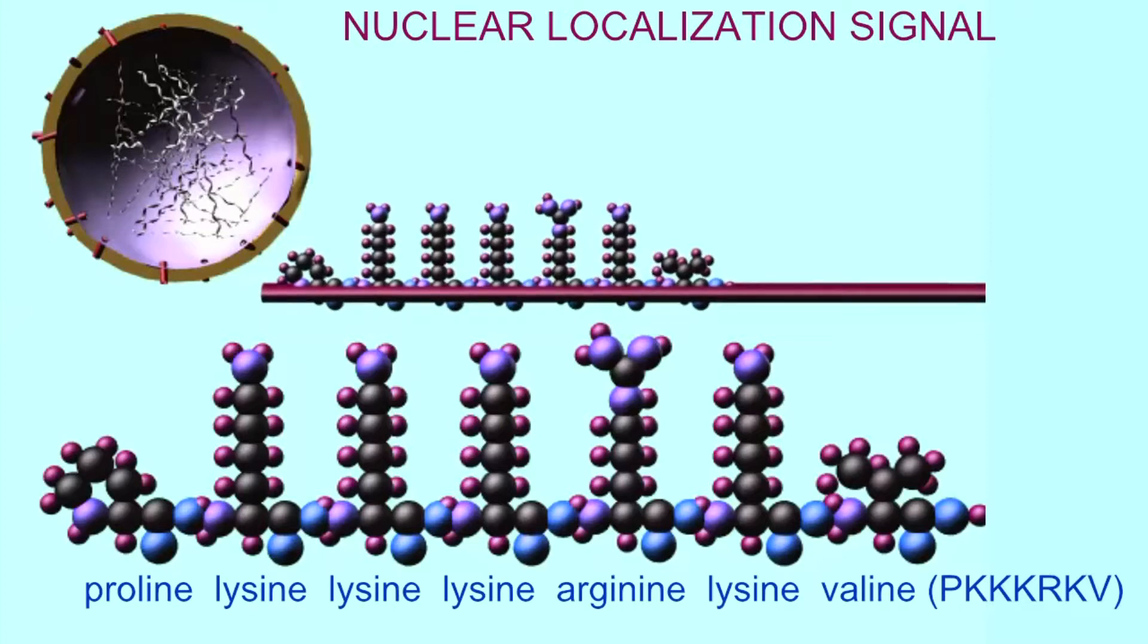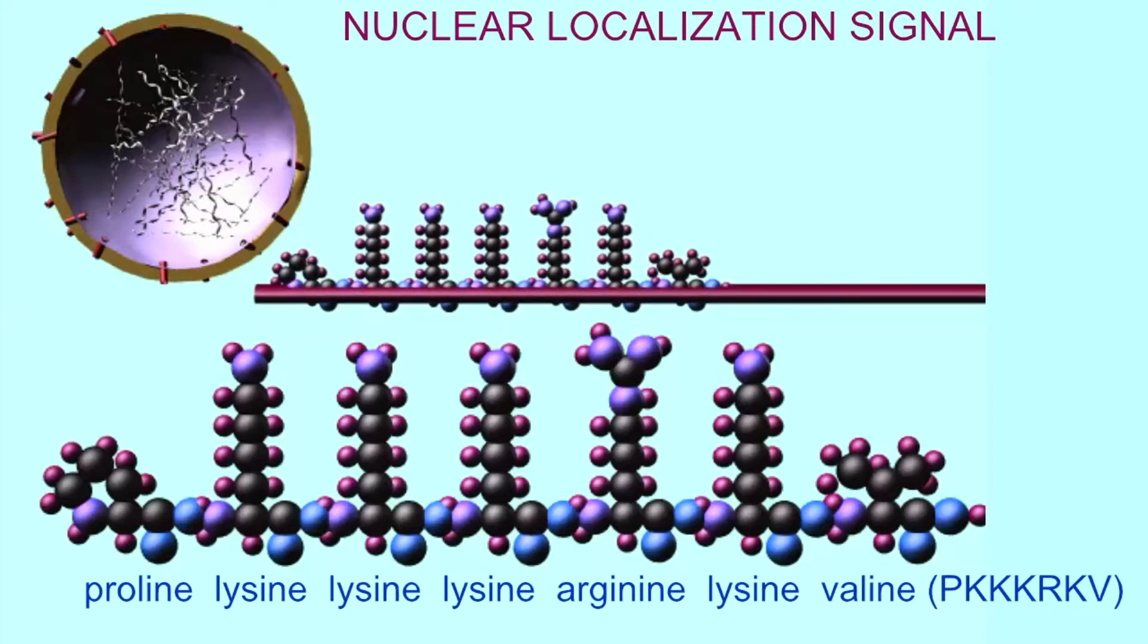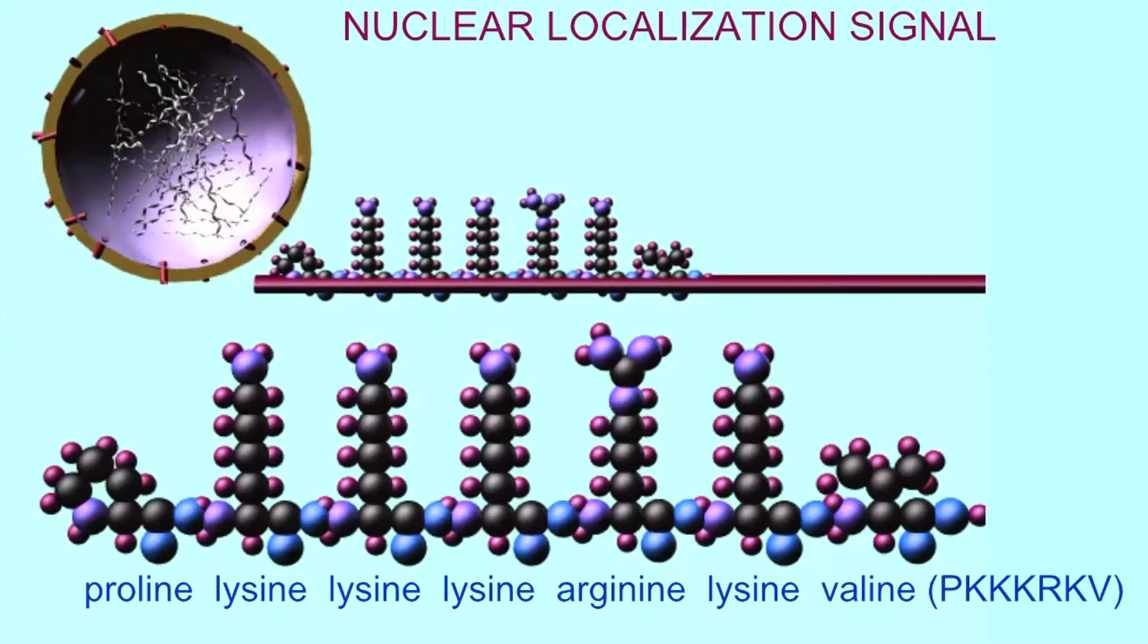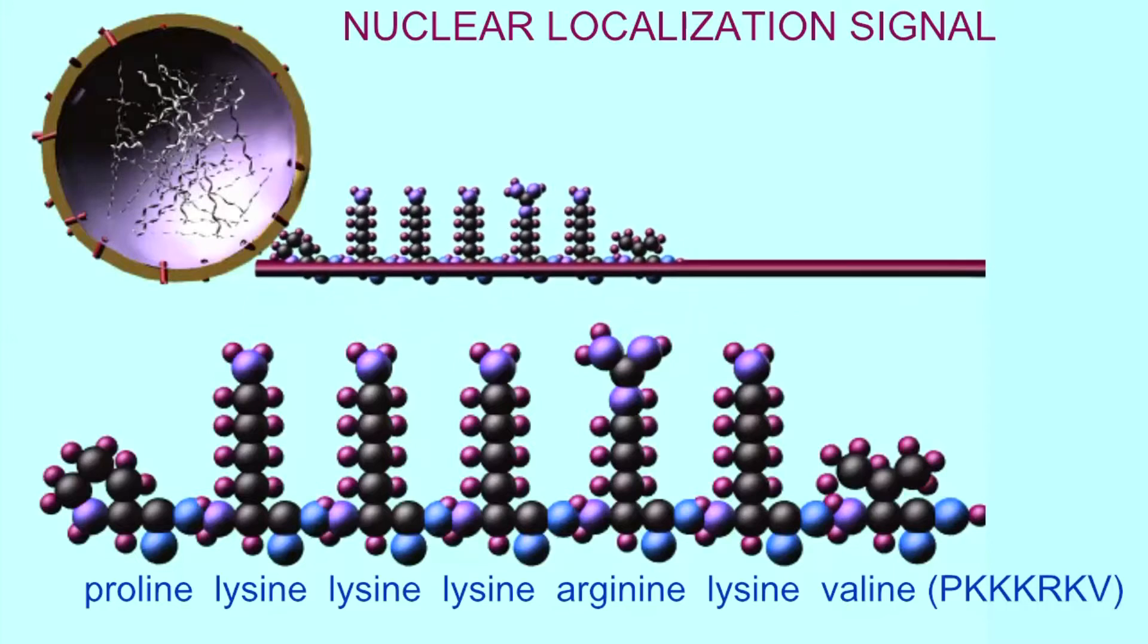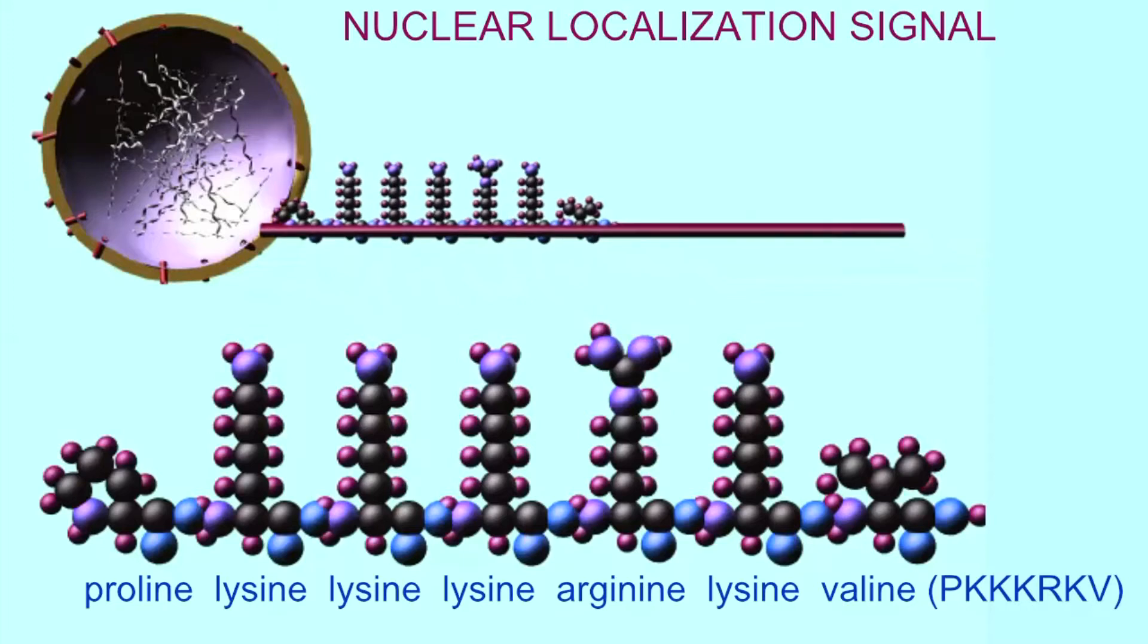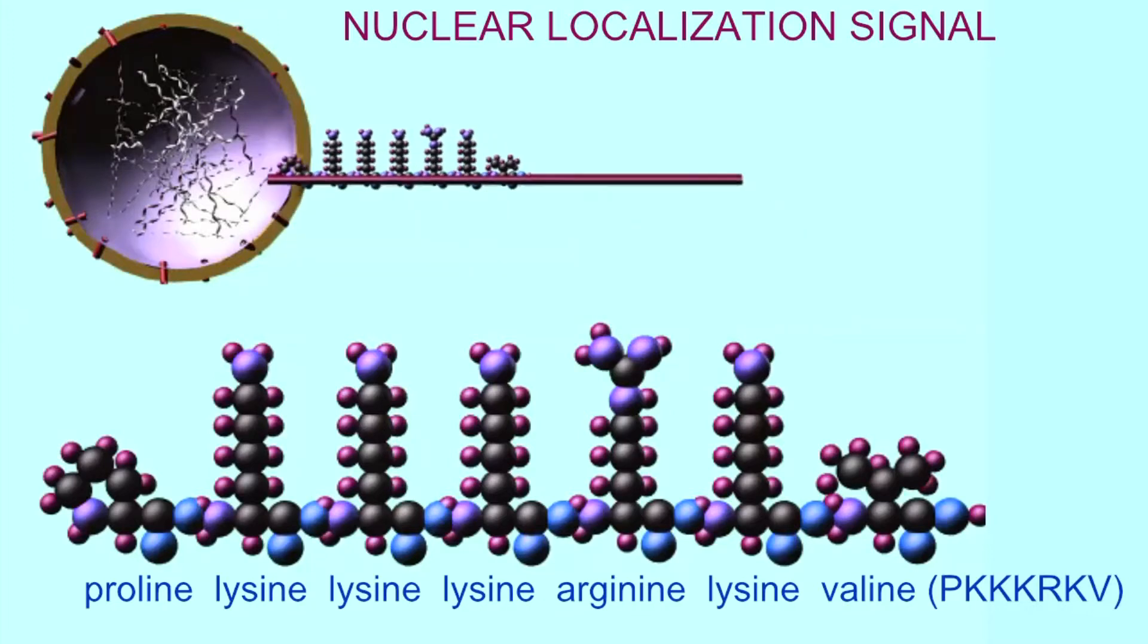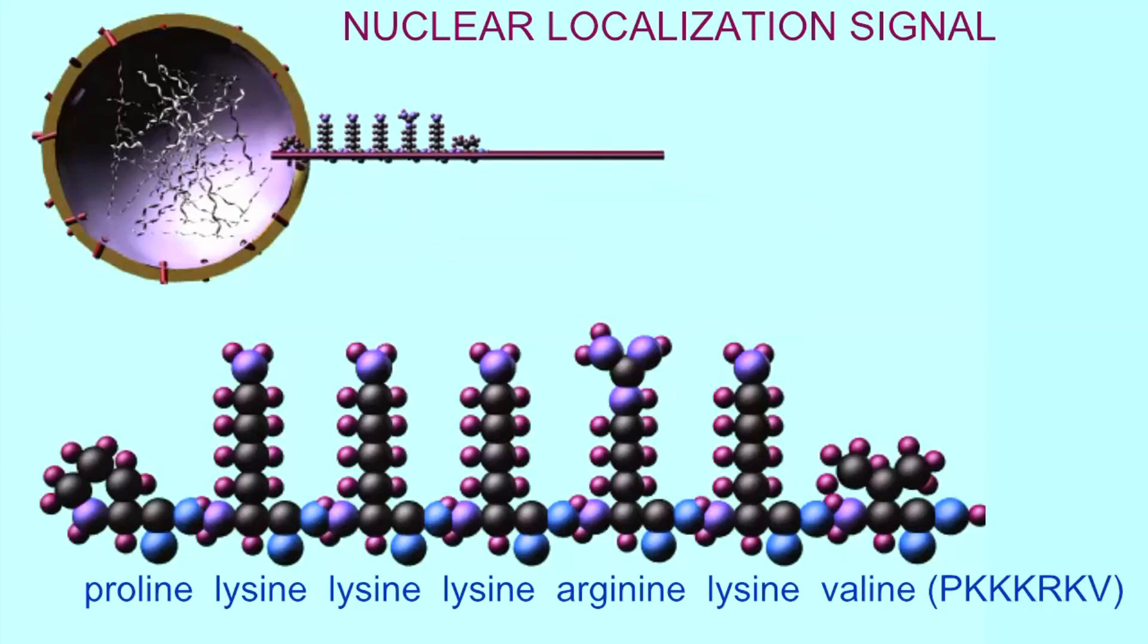Some proteins have amino acid sequences which bind to other proteins known as importins, which transport these through the nuclear pore from the cytoplasm into the nucleus. There are several known nuclear localization signals, such as this one, which begins with proline, followed by three lysines, an arginine, a lysine, and ending in a valine.